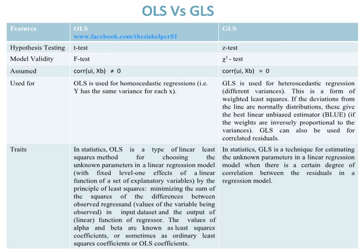OLS is used for homoscedastic regressions, where Y has the same variance for each X, while GLS is used for heteroscedastic regression with different variances — this is a form of weighted least squares. If the deviations from the line are normally distributed, these give the Best Linear Unbiased Estimator (BLUE), if the weights are inversely proportional to the variances.